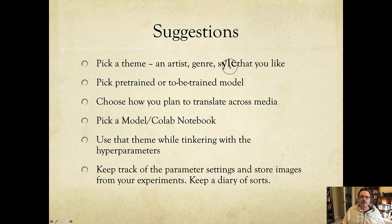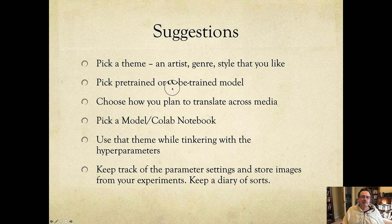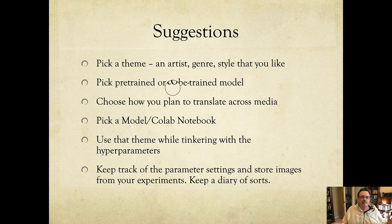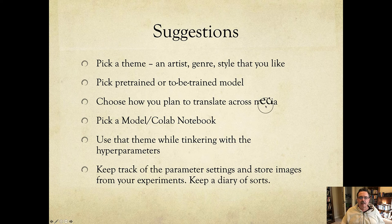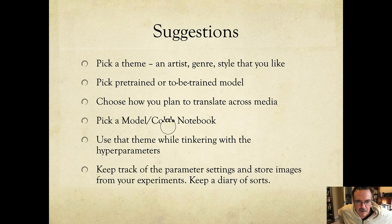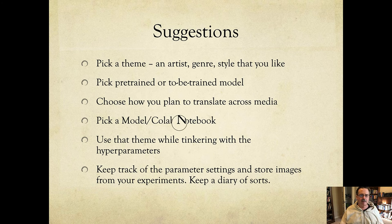Some suggestions: pick a theme, artist, genre, or style that you like — something you're going to find interesting, otherwise what's the point? Pick a pre-trained or to-be-trained model. In some cases training has to be done; in others, someone else has already trained a model on a dataset like WikiArt or ImageNet — gigantic datasets involving images, sometimes with classes or text captions. Think about how you want to translate across media: image to text, image to video. I prefer the Colab notebook route, and I would say most AI artists do as well.